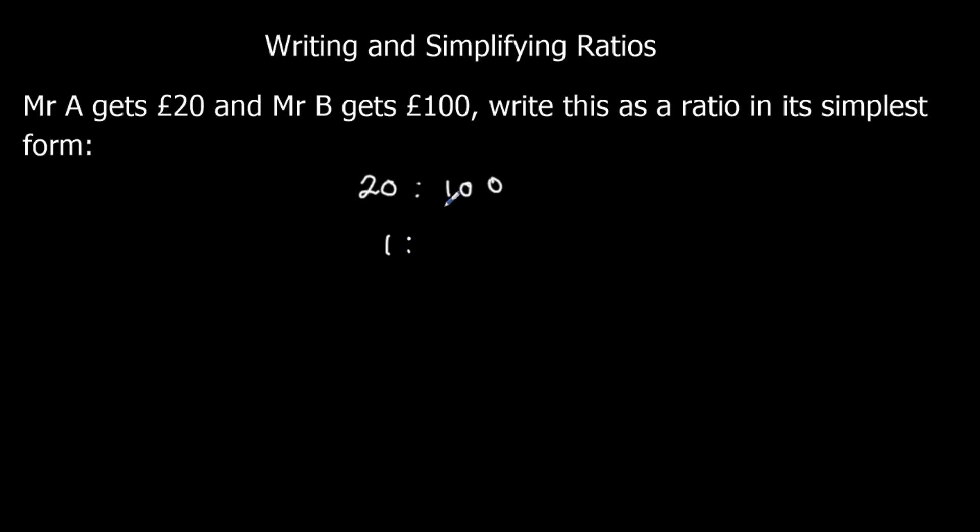So we've got 1 twenty and 5 twenties. So the ratio is 1 to 5. That's the simplest form because it won't go down anymore.